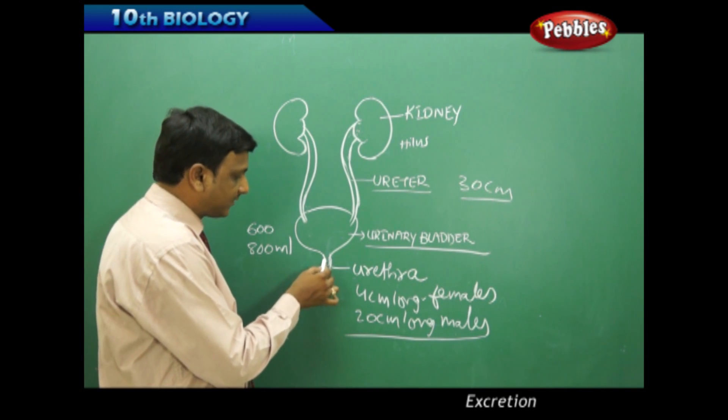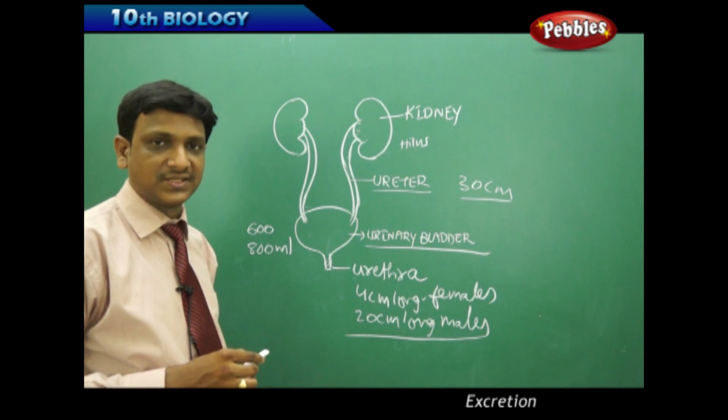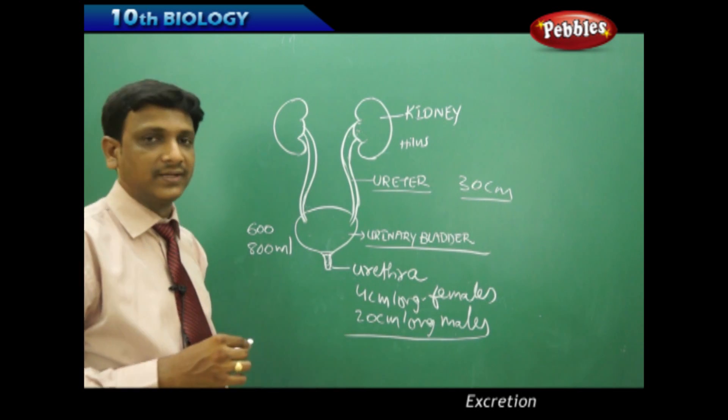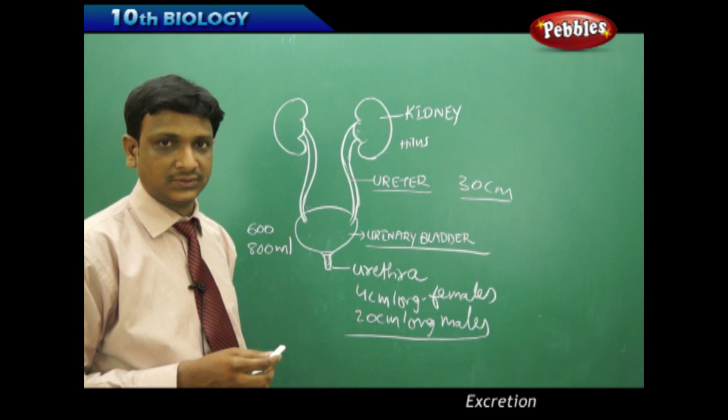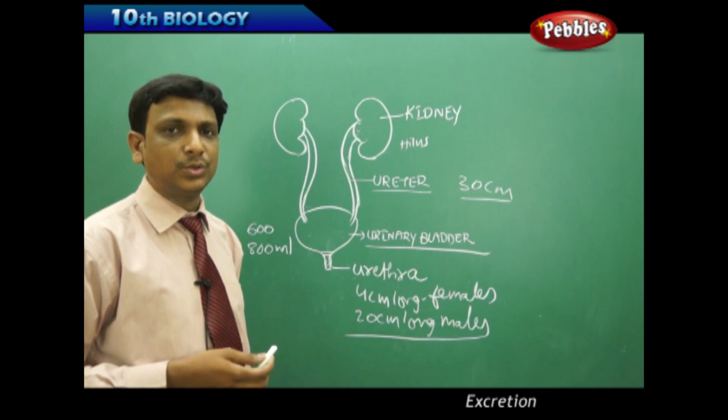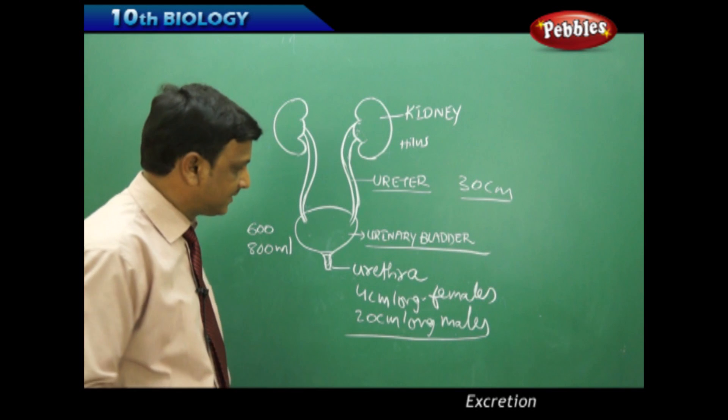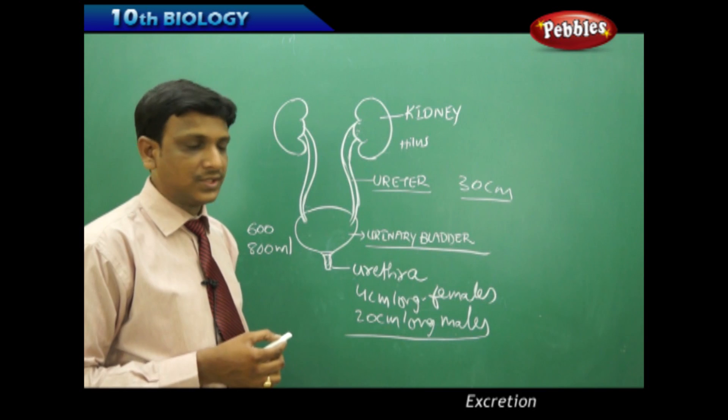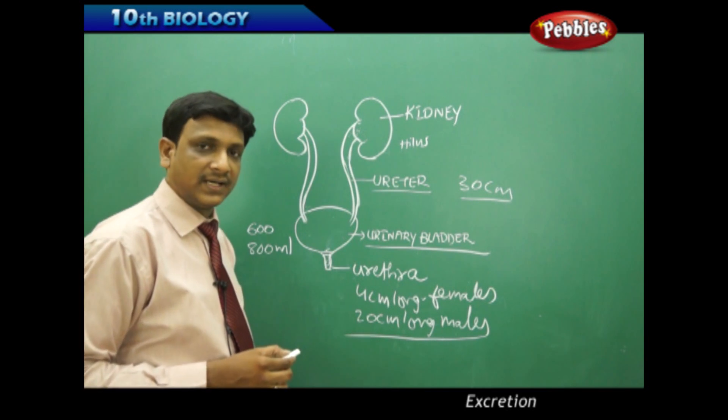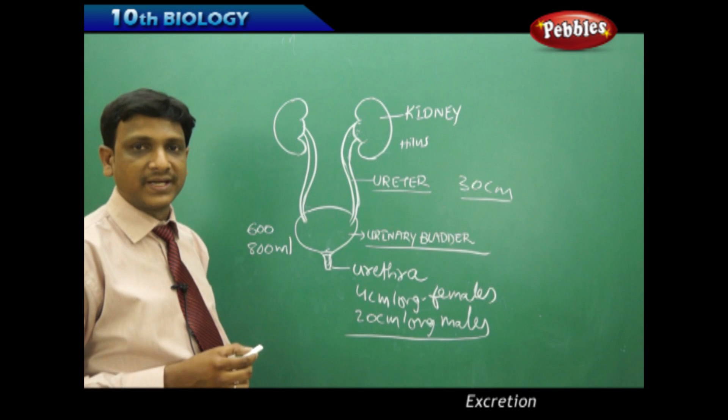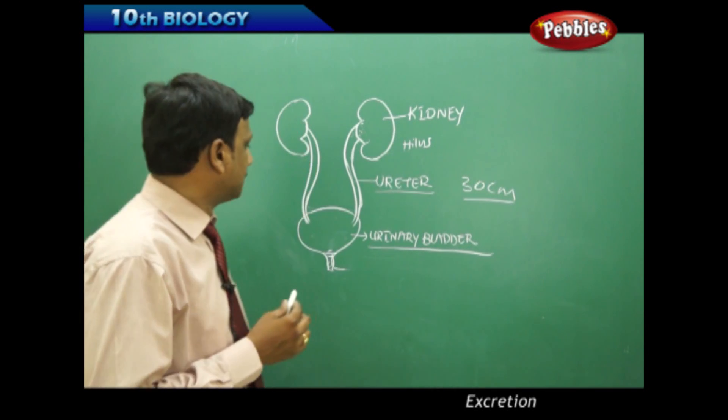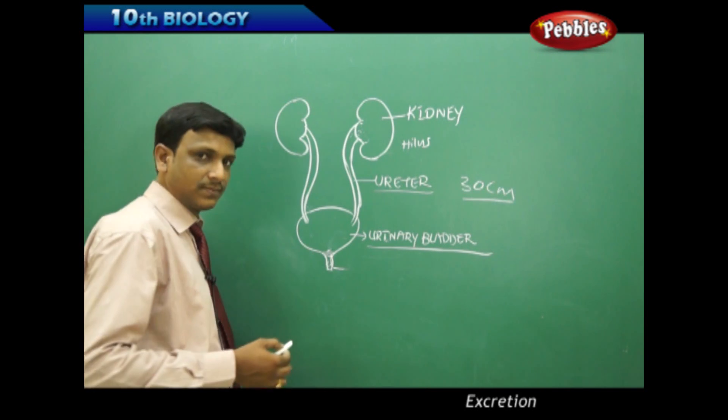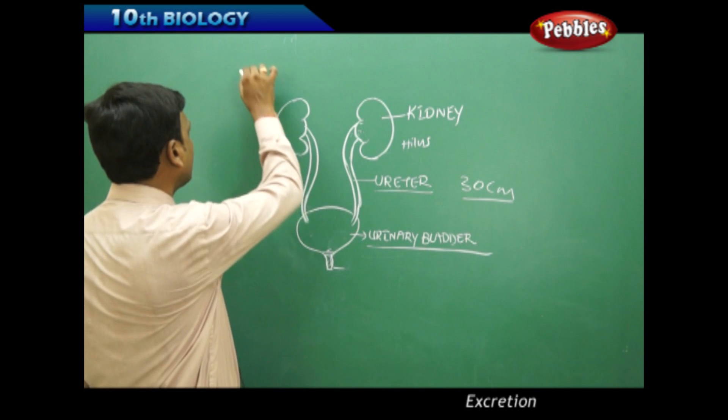This urethra is controlled by two sets of circular muscles called sphincters. These muscles control and prevent the urine from flowing down. When there is an urge for urination, these muscles relax and let the person urinate. Among these two muscles, one is involuntary and the second muscle is voluntary, under the control of the brain. The release of these sphincter muscles to pass urine is called micturition.